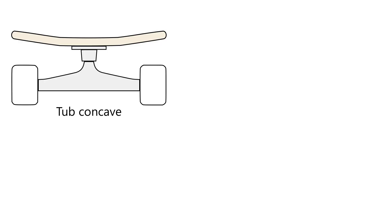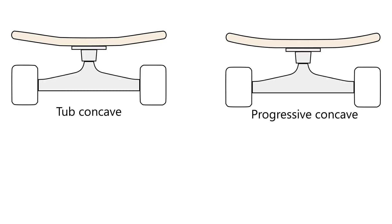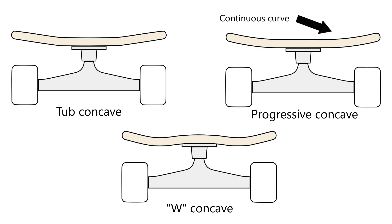Progressive concave is similar to tub, except the folds have more curvature. And w concave is also similar, except the flat section in the middle is replaced by a convex curve.